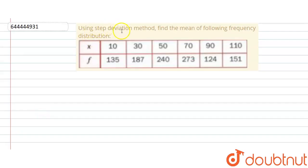The question says: using the step deviation method, find the mean of the following frequency distribution. We are given this frequency distribution and we have to use the step deviation method for finding the mean.